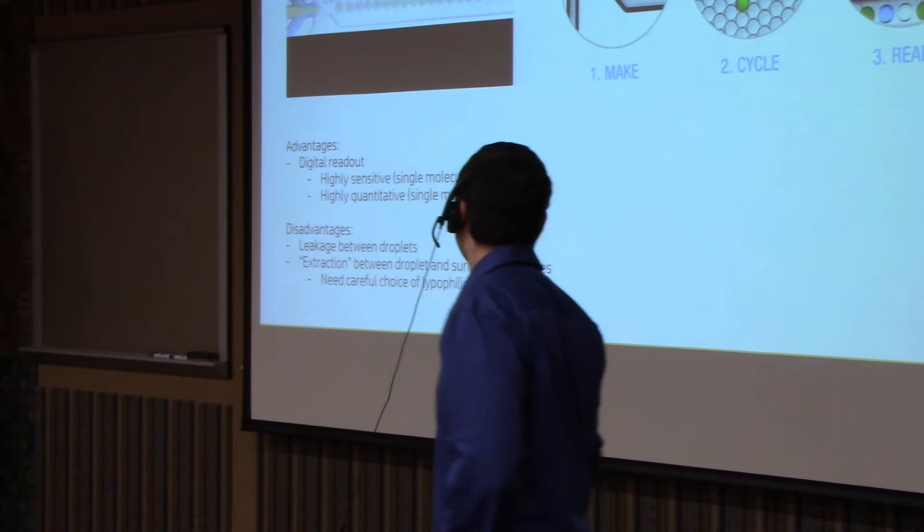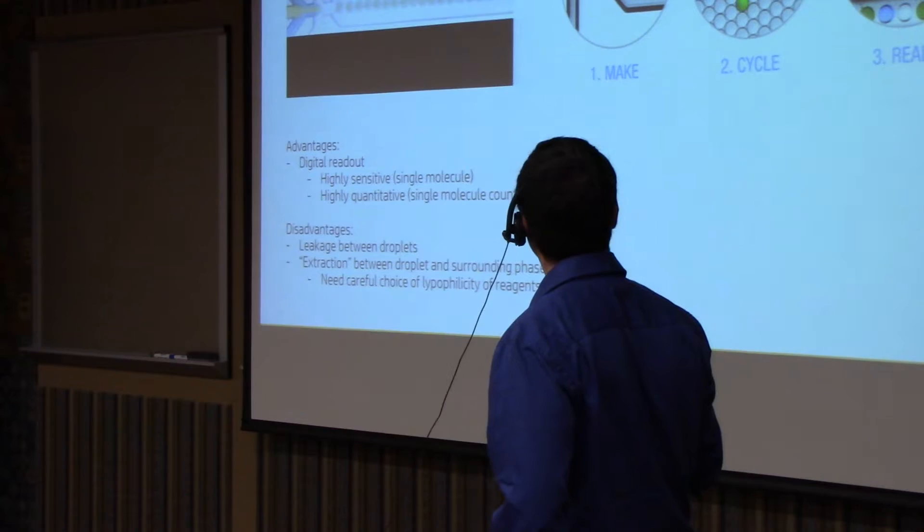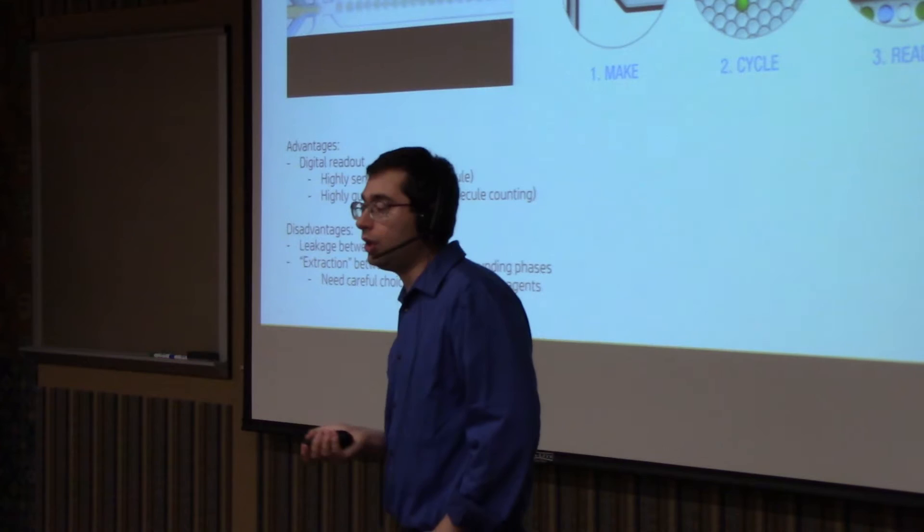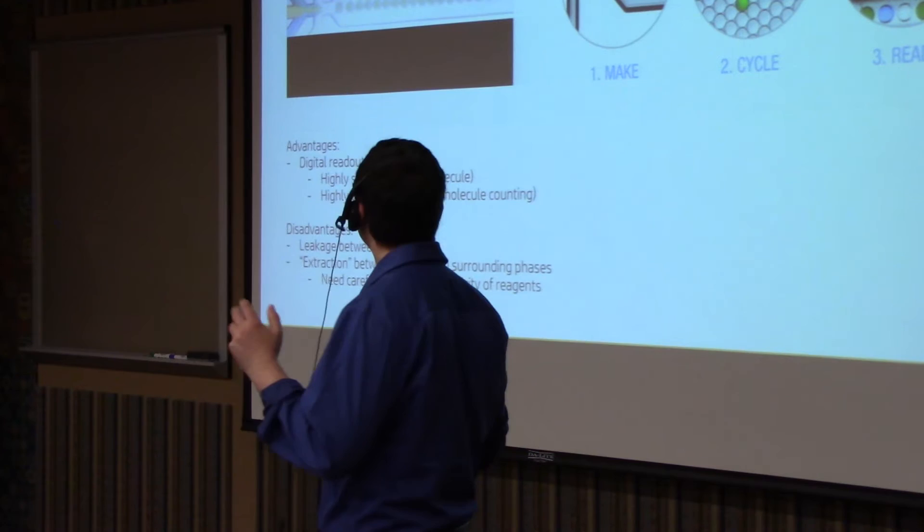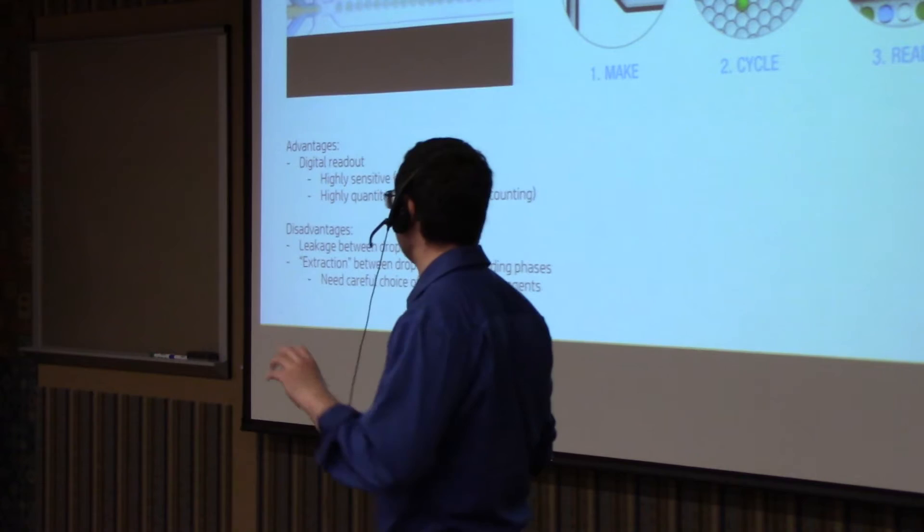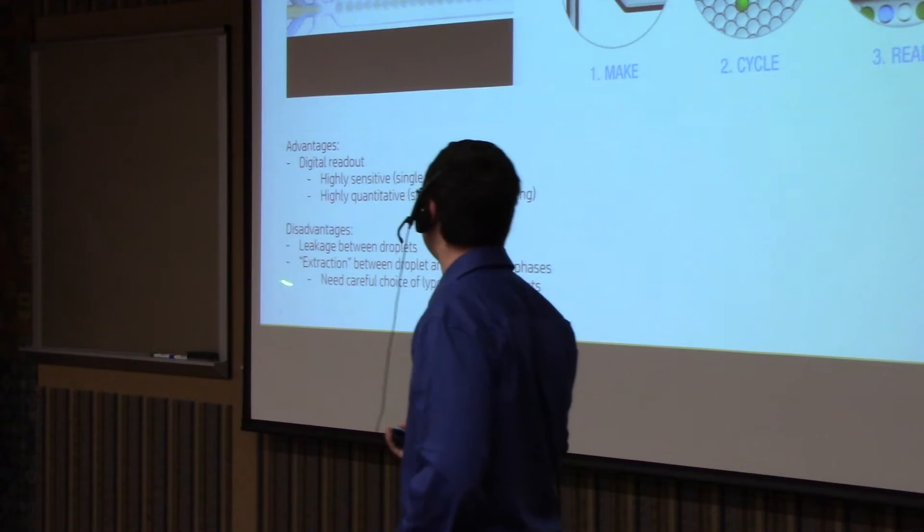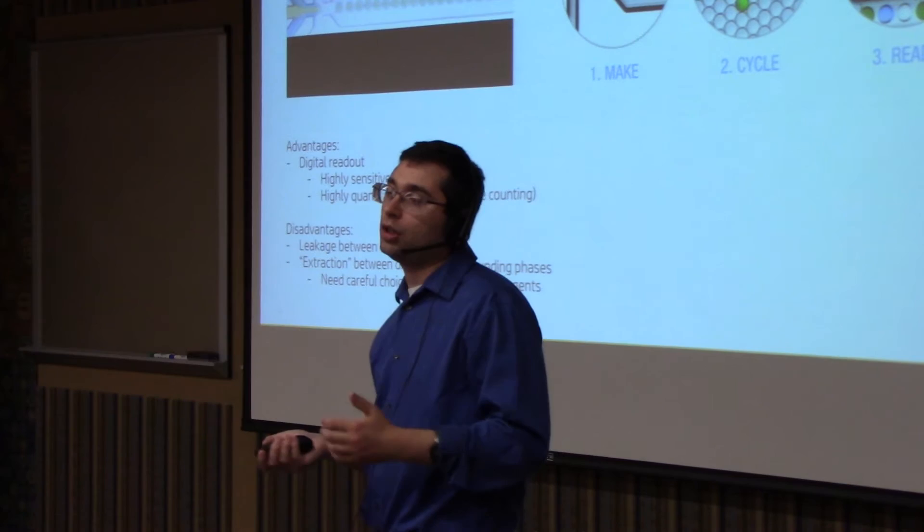But there are some disadvantages to this droplet microfluidics. In that, if you don't choose the surrounding oil or surrounding phase correctly, there is some leakage between the droplets. And that can happen. And so it's not so much a concern with PCR or digital PCR, but there are concerns with other techniques where your analytes have mixed polarity, I guess. And so they can be in both phases with high probability in both phases. Maybe like 80% in a droplet but 20% outside the droplet. And so there might be mixing between the two droplets. And there's also a danger of the analyte being extracted out of the droplet into the surrounding phase. Again, if at least with 20% probability it likes the other phase more than, for example, the phase that's inside the droplet.